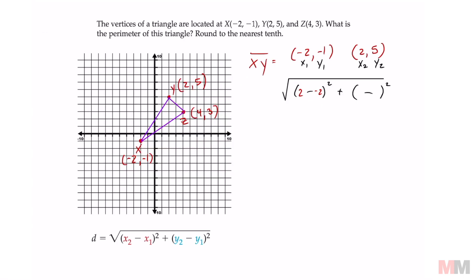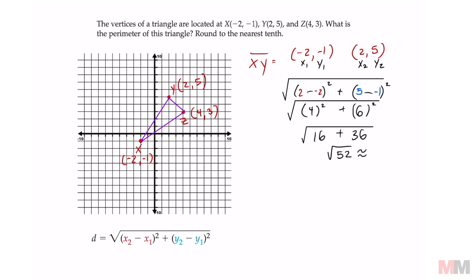Now we move on to the second set of parentheses: that's going to be 5, my y2 number, and another double negative — negative 1. Simplifying: 2 minus negative 2 turns into 4 squared, and 5 minus negative 1 turns into 6 squared. That gives us 16 plus 36 under the square root, which is the square root of 52, and that's approximately 7.2. So the distance of segment XY is 7.2.